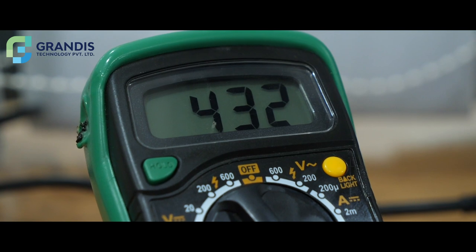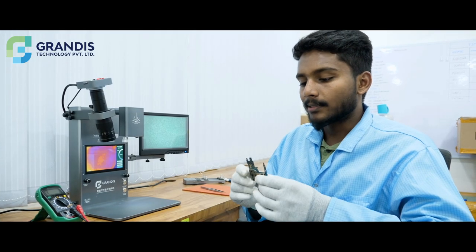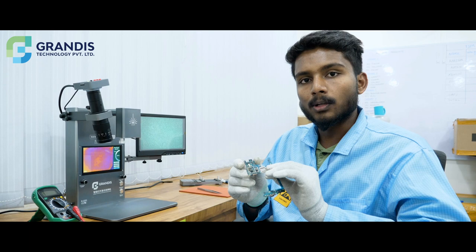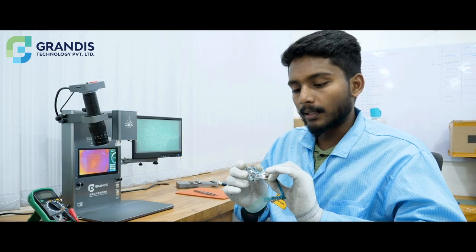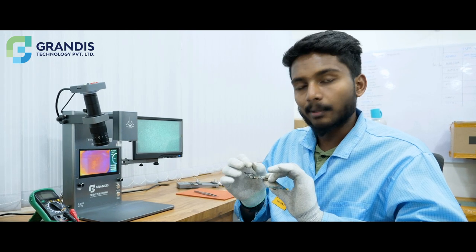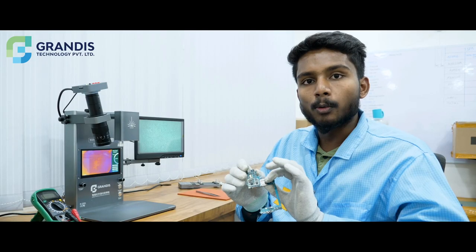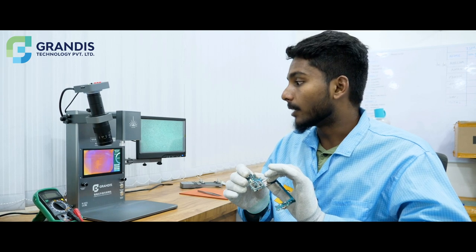Now, we check the board condition. Here we have another example with Samsung E7. We need to find the shorted component among many components on the board.